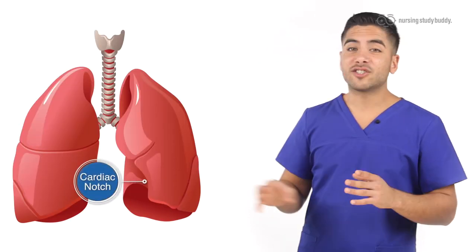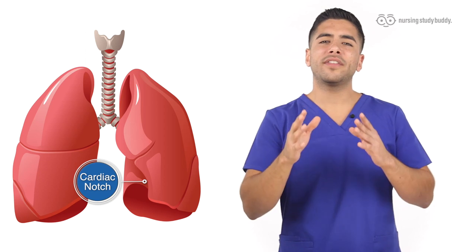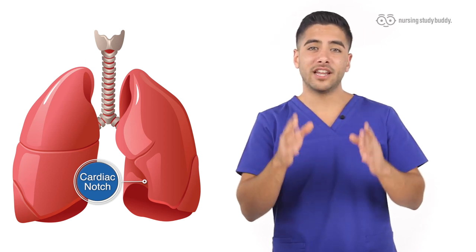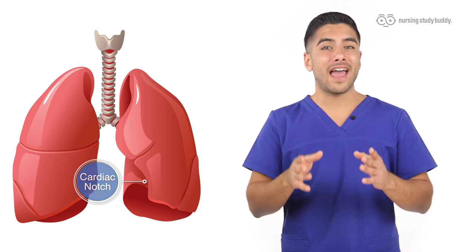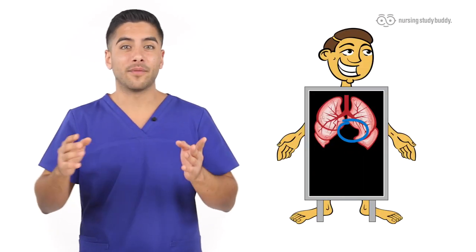On the left lung there's also a cardiac notch, which is where the heart makes a bit of an indentation on the lung. If you ever want to look at it on a picture or on an x-ray, it makes it easy to identify the left lung from the right lung.